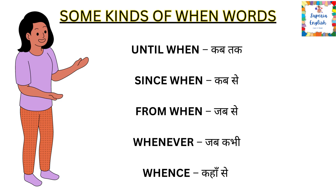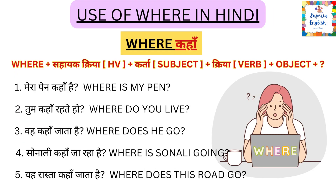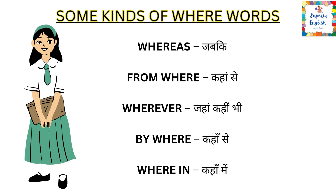The third word is 'where.' 'Where' means 'kahan' in Hindi. The sentence structure is the same; just replace the WH word with 'where.' Examples: Mere pen kahan hai — Where is my pen? Tum kahan rehte ho — Where do you live? Vo kahan jaata hai — Where does he go? Sonali kahan ja rahi hai — Where is Sonali going? Yeh raasta kahan jaata hai — Where does this road go? Some 'where' words: whereas (jab ki), from where (kahan se), wherever (jahan kahin bhi), by where (kahan se), wherein (kahan mein).